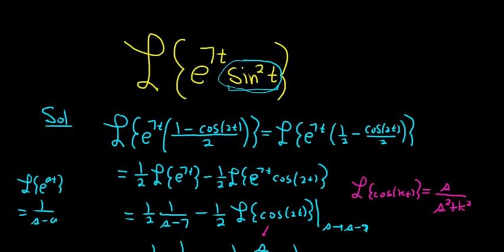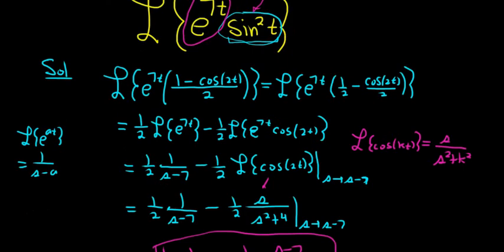So again, when you see something like this, this should immediately ring a bell, you know, identity, and then use the identity, and then you can handle the e. If there's an e here, you can always do a shift after you use your identity. So that's it.